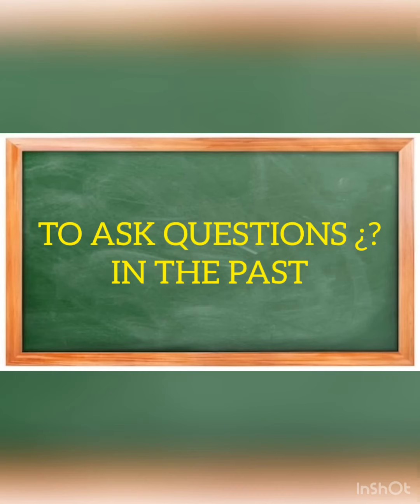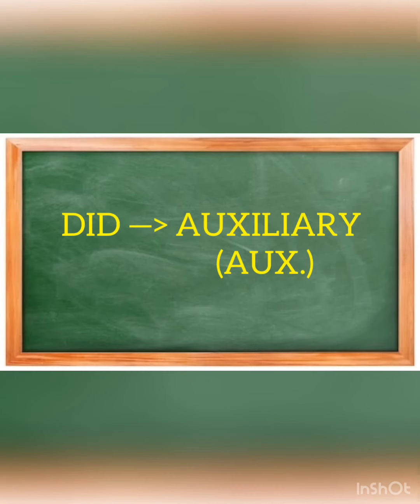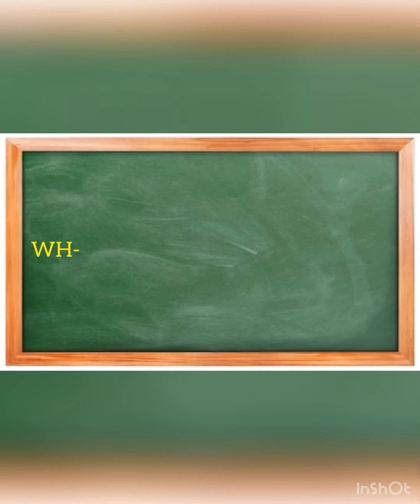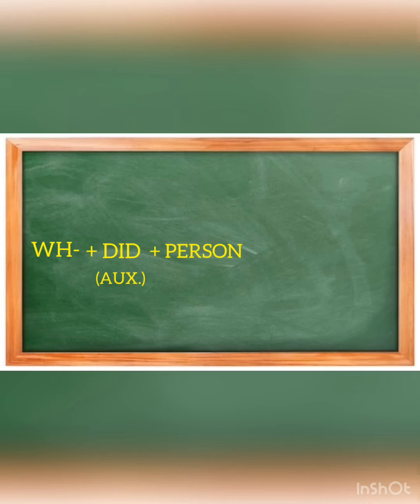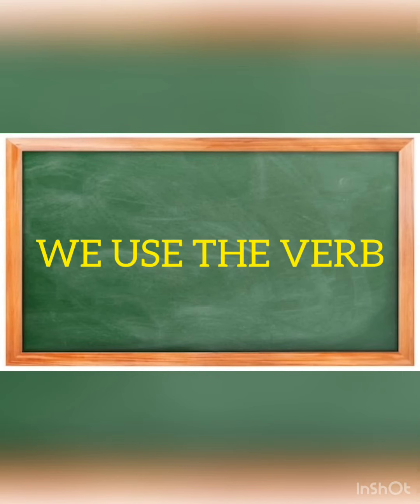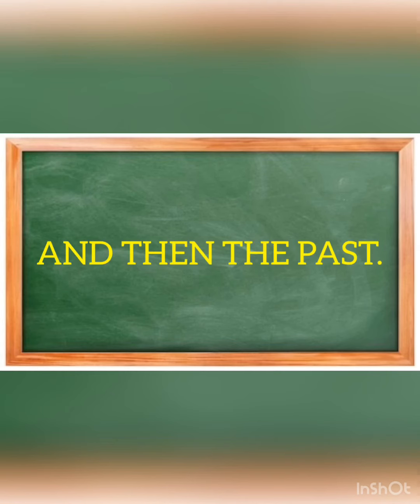To ask questions in the past, we use DID as an auxiliary. The structure is the following: the WH question word — for example, what, where, when — then the auxiliary DID, then the person, and then the infinitive form of the verb, for example, go. But for the answer, we use the verb in the past — we use the person and then the past tense.